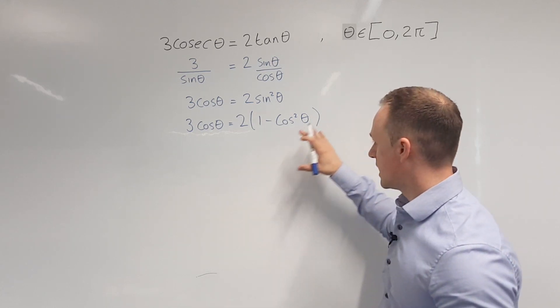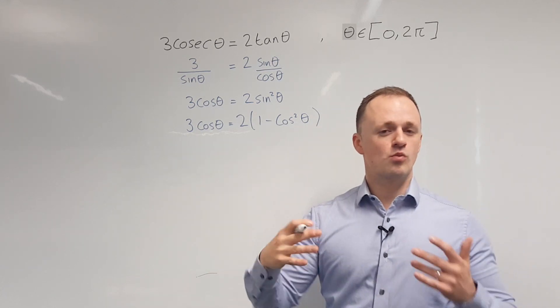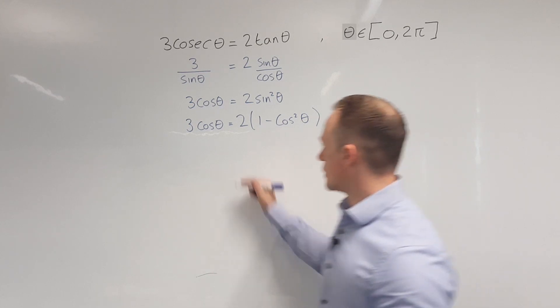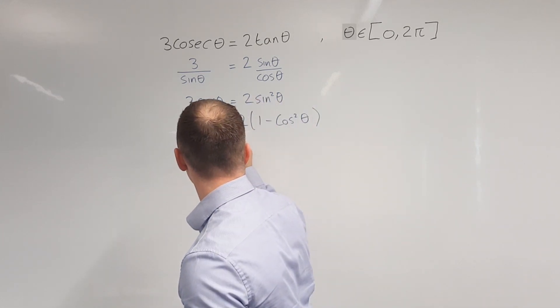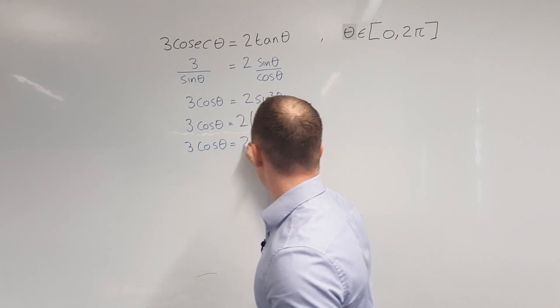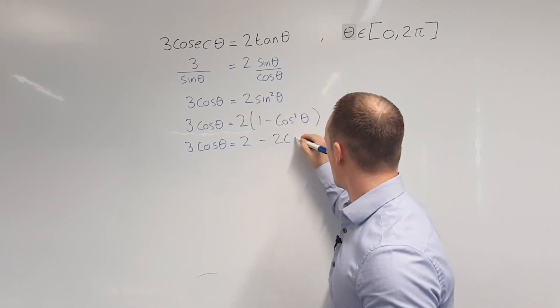So all I need to do is expand and rearrange, and then get one side equal to 0. So we'll leave the left-hand side again as 3 cos theta. The right-hand side becomes 2 minus 2 cos squared theta.